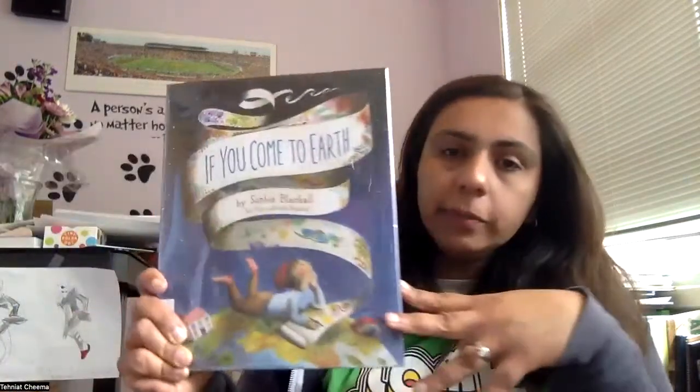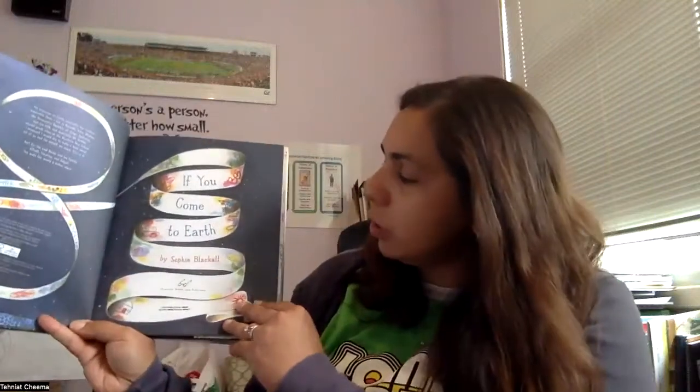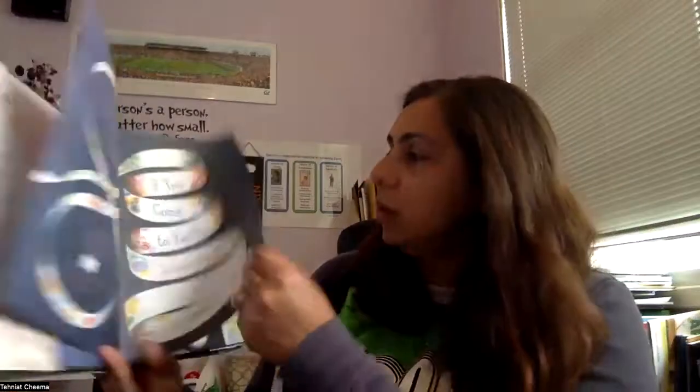Today's book, which I didn't get to until right now, it's almost five, is If You Come to Earth, written by Sophie Blackle, and she is a two-time Caldecott medalist.